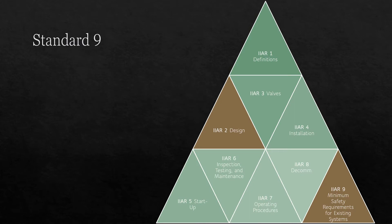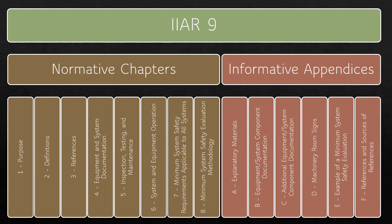A simple way to think about Standard 9 is as a less stringent version of IIAR Standard 2. Standard 9 contains eight normative chapters and six appendices. The normative chapters establish minimum requirements for existing systems and use words such as must and shall. These chapters are intended to be mandatory. The appendices are informational and contain non-mandatory content that complements the normative chapters.